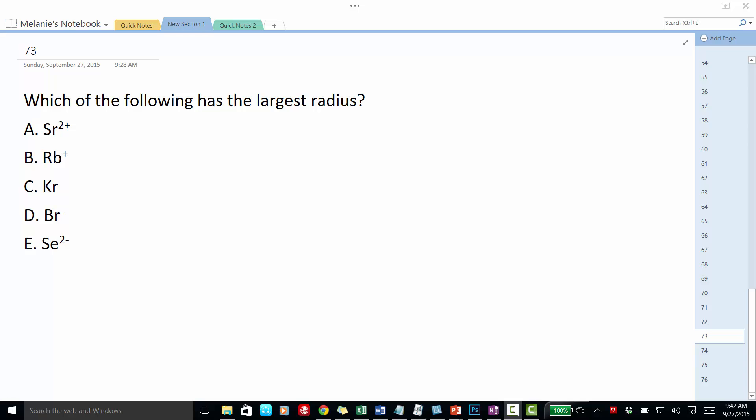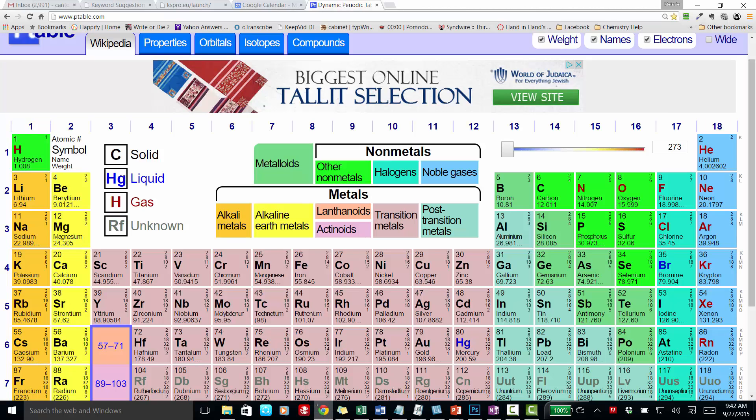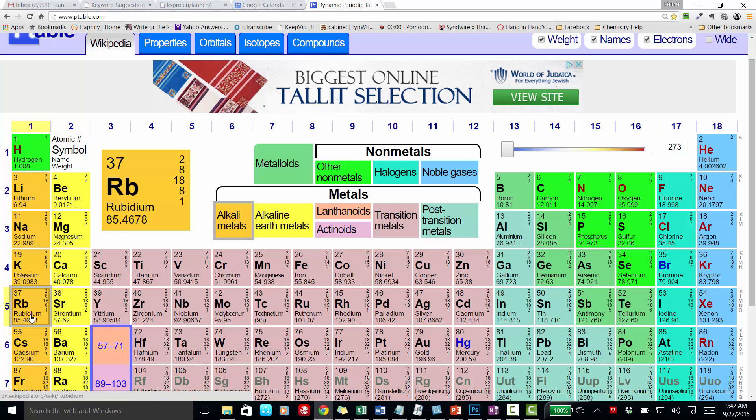So let's look where these are on the periodic table. We have the strontium ion, which is here. So strontium ion, the rubidium ion, krypton, bromide ion, and the selenium ion.